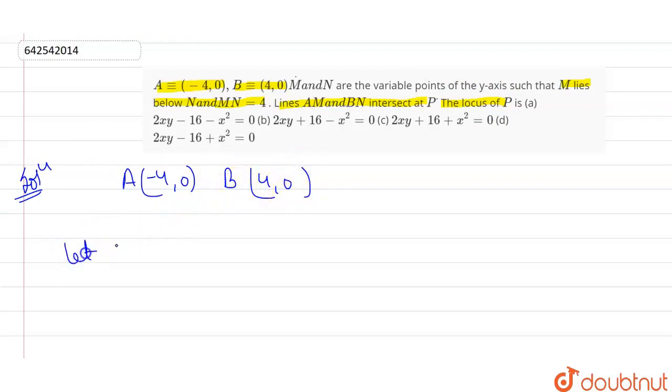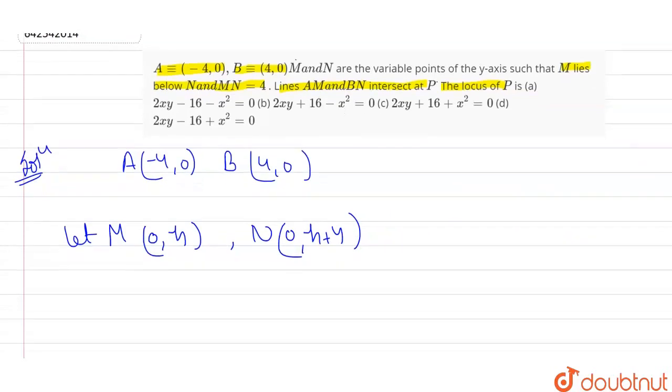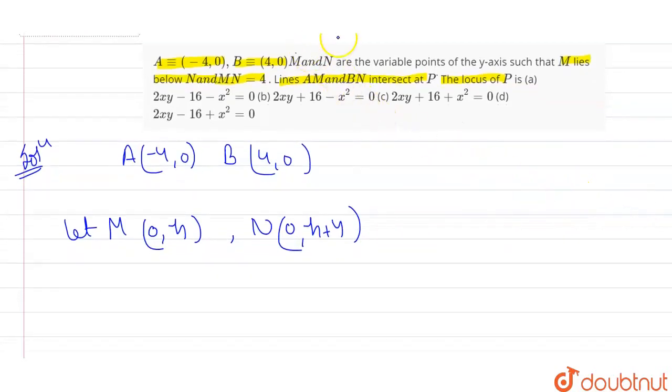Let point M be (0,h). And it says that M lies below N. So basically, N becomes (0, h+4) because it lies on the y-axis and 4 units higher.